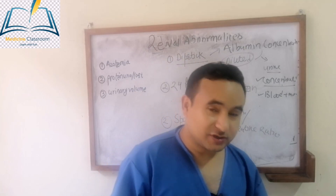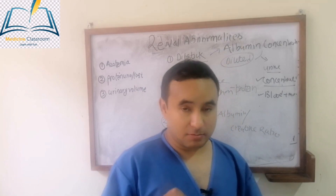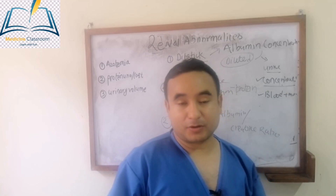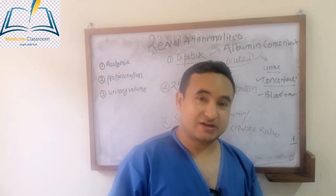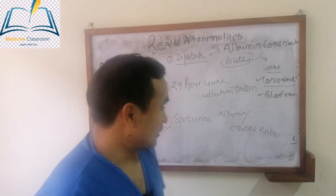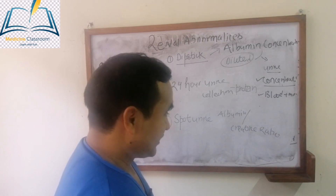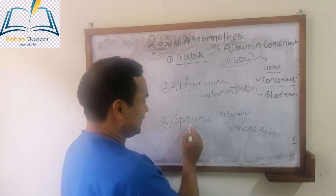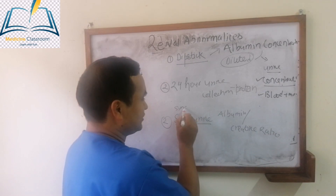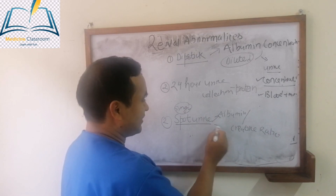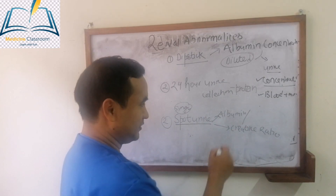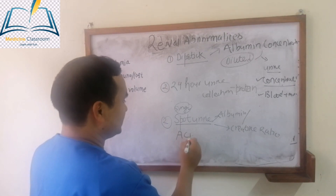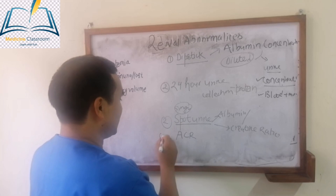However, carrying a large jar of urine from home to hospital is a cumbersome process and not desirable for patients. For that scenario, you can do a spot urine albumin-to-creatinine ratio, where you take a single urine sample and calculate the ratio of albumin to creatinine in that sample — the urine albumin-to-creatinine ratio.